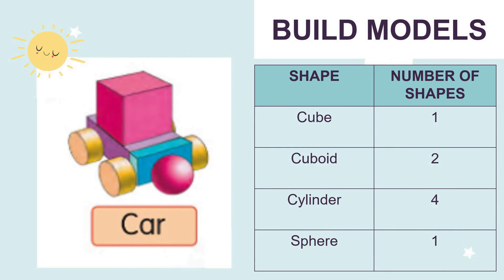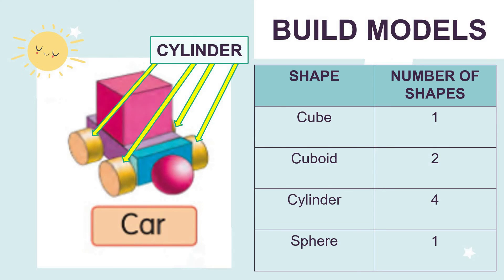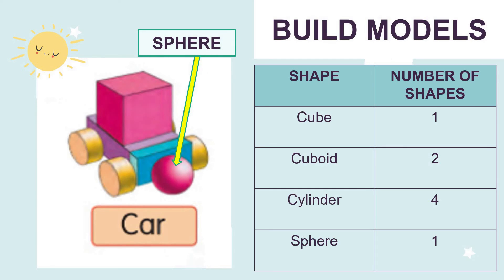Now let's look at this model — this is a model of a car. Let's name the 3D shapes in this car. There is 1 cube, 2 cuboids, 4 cylinders, and 1 sphere.